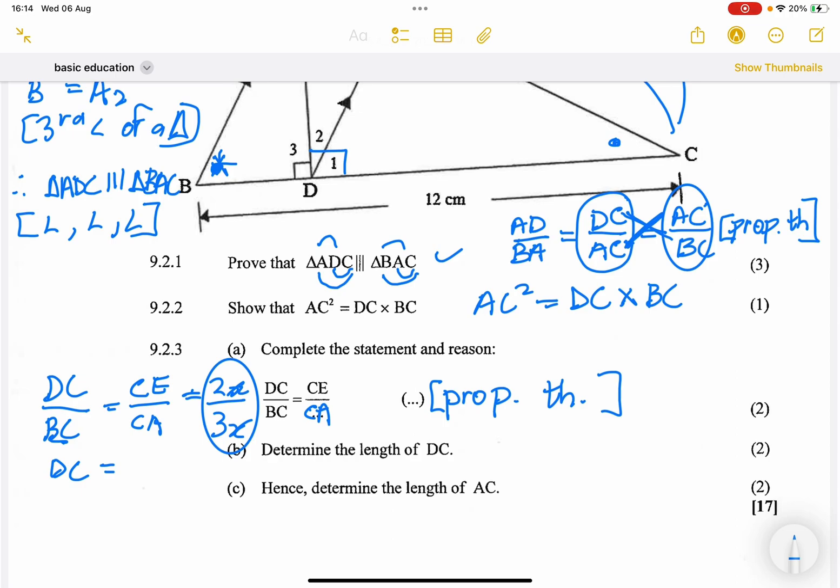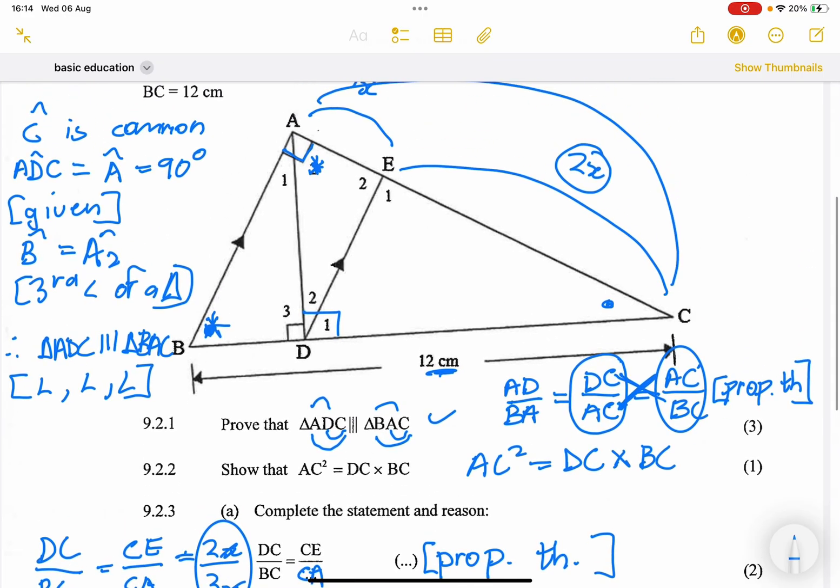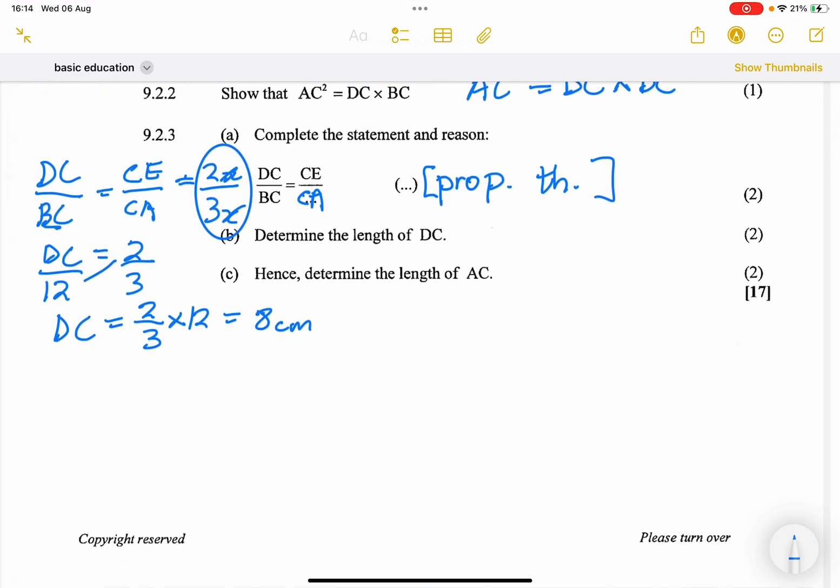So DC is equal to, now we're given the value of BC. So DC over BC, which is 12. There it is, it's given there. So DC is equal to 2 over 3. Ladies and gents, we can cross-multiply. So DC will be 2 over 3 multiplied by 12. And in this case, that would give us 8 centimetres. So we've got DC to be 8 centimetres. All right, ladies and gents, and that is how we get that value.